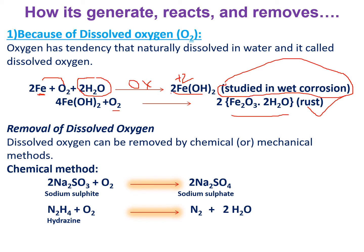How can we remove this dissolved oxygen? By adding sodium sulfite (Na2SO3) to the water to absorb the dissolved oxygen — it produces sodium sulfate (Na2SO4). Two moles of sodium sulfite absorbs one mole of oxygen and forms two moles of sodium sulfate. Another method is by adding hydrazine: it produces nitrogen gas and water. Adding hydrazine is the best option because we produce inert nitrogen gas, which will not affect any boiler material. With sodium sulfite, you are removing oxygen but creating sodium sulfate, which can cause sludge or scale problems.